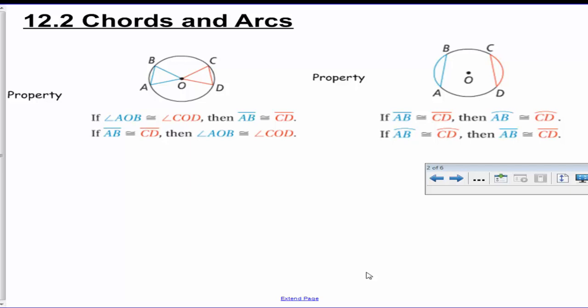So there are two properties listed up here. The first one says if angle AOB, which is this angle here, is congruent to angle COD, this angle here, then we know that those chords AB and CD are going to be congruent. So if those central angles are congruent, then the chords associated that open up to those chords are going to be congruent.